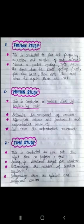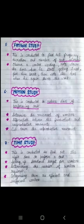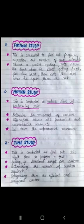The method involves: first, observe a worker while working and note down the time when he starts getting tired. When he starts to get tired, give him a break. Then note the time when he starts working again. That period in between is the rest interval. You have to check how much duration you need to give for the rest interval.